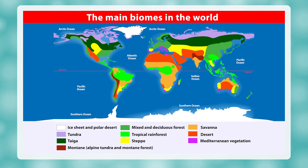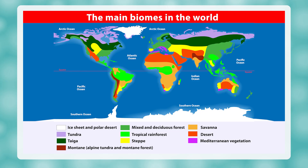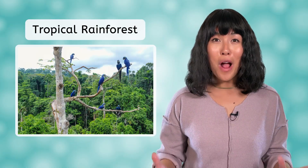In North America, the most common biomes are the deciduous forest, steppe, and desert. South America has these as well, plus a large area of tropical rainforest. Savannas are common in Africa, while taiga and tundra biomes can be found at far north and south latitudes around the world. We'll look at a few of these biomes in more detail today. Let's start with the most diverse biome of all: the tropical rainforest.